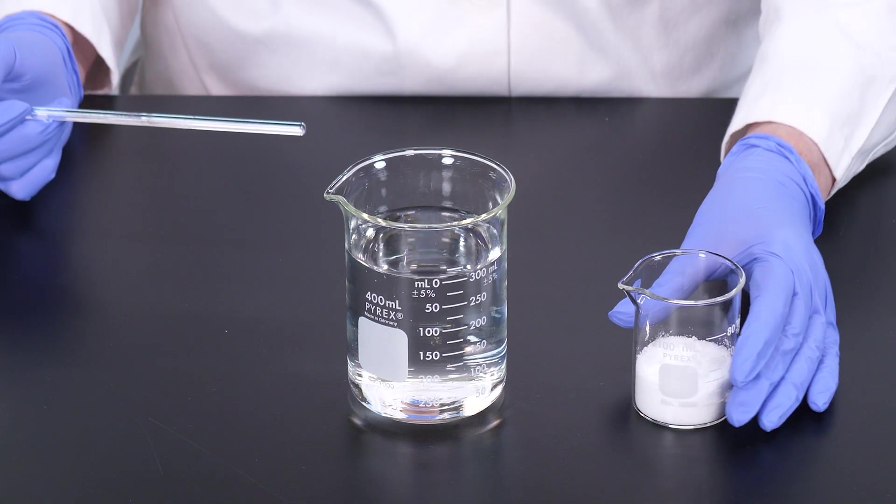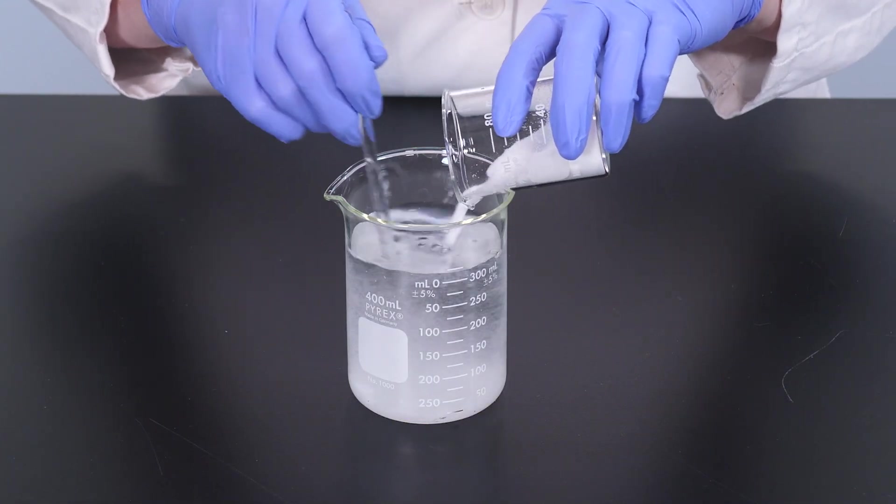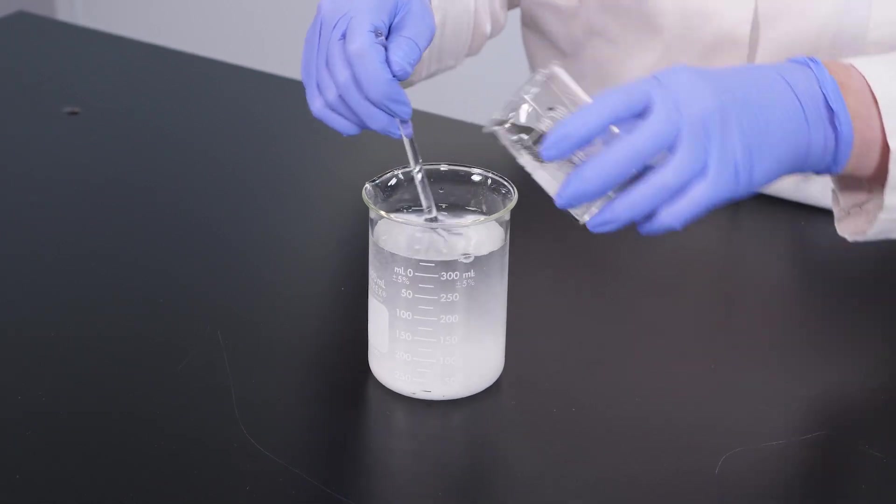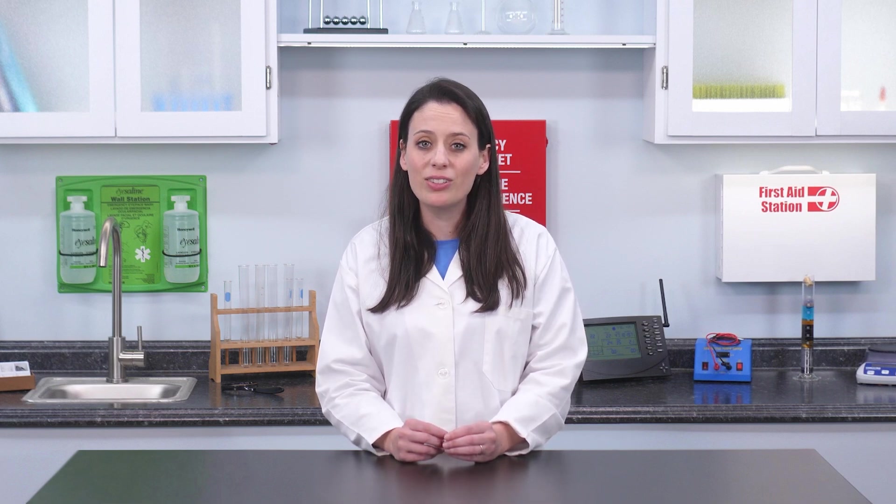For this solution, we will pour 50 grams of sodium chloride, also known as table salt, into a beaker containing 300 milliliters of water. In this solution, the salt is the solute and the water is the solvent.